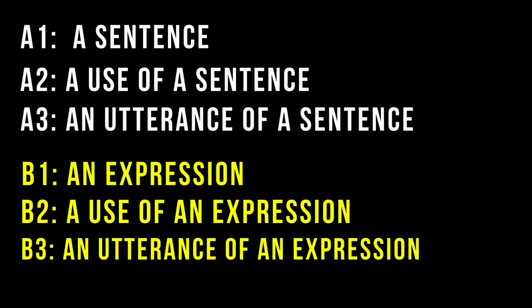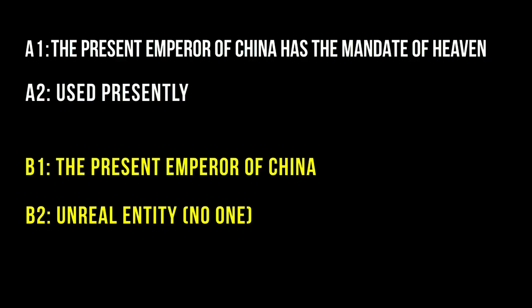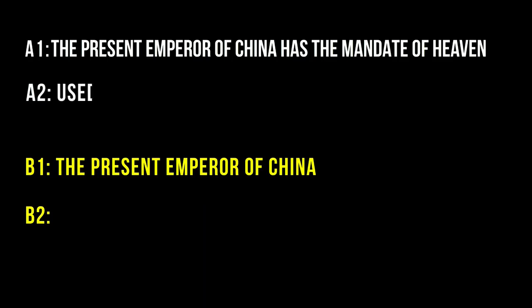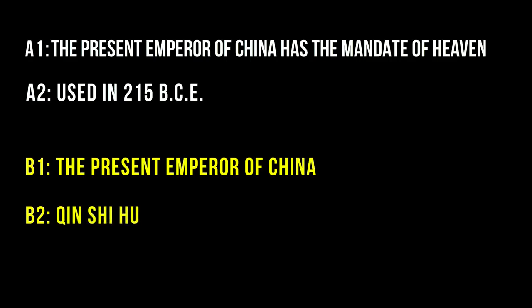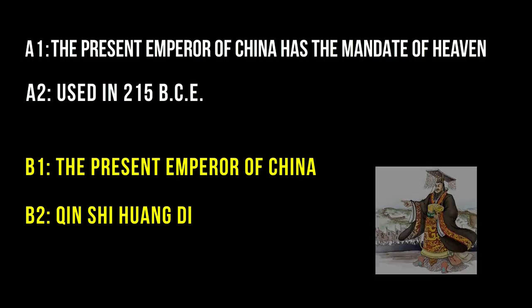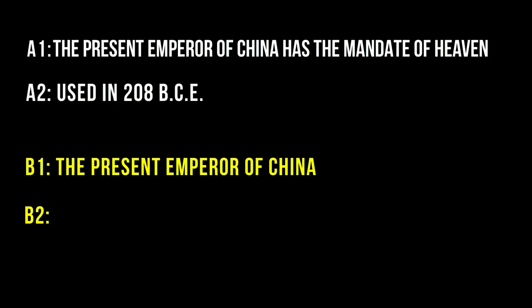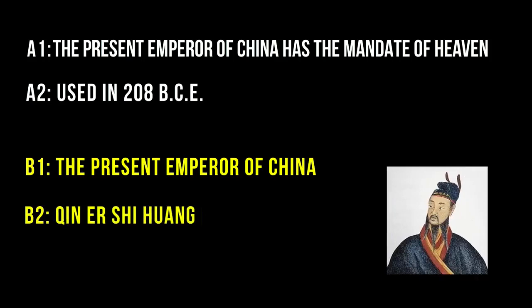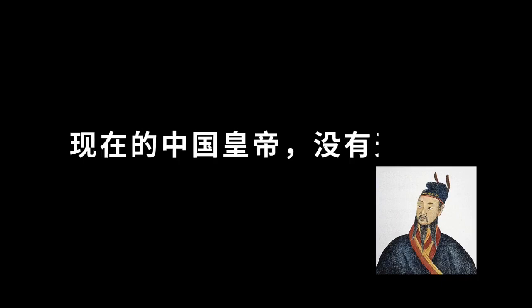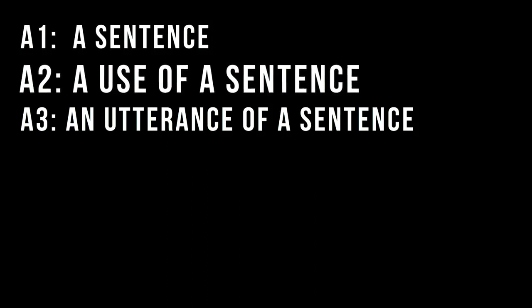According to Strawson, Russell doesn't take into account the important function of the use of a statement or expression. If we today said the above statement, we would be saying a false statement. However, if I was a simple peasant in the year 215 BCE, living in China under the reign of Qin Shi Huangdi and said it, then this sentence would be true. If another peasant in the year 208 BCE said it, that statement would definitely be false, because Qin Er Shi Huangdi was a very unwise ruler. In each of these instances, the speakers use the same sentence, but their use of the sentence is different, because they are referring to different emperors.